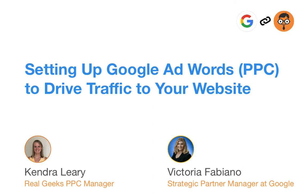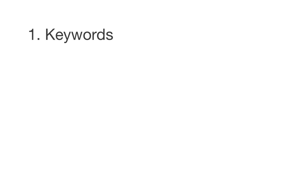We'll go over the basic tenets of AdWords to start, and then I will walk you through an example account setup. We'll go over things like linking the AdWords account to your analytics account and adding the conversion code. There are five really basic components when setting up the AdWords account. The first is the keywords you're using — you want to make sure they are very relevant. For example, 'Honolulu homes for sale' might be a keyword phrase you'd want to bid on, and we'll go over some different keyword types in a little bit.